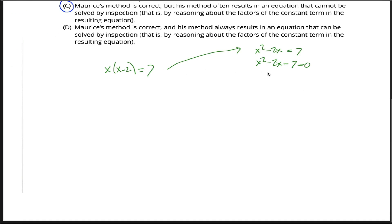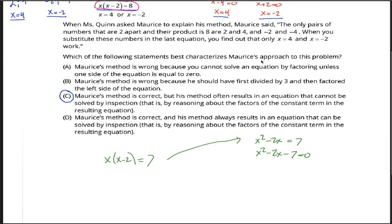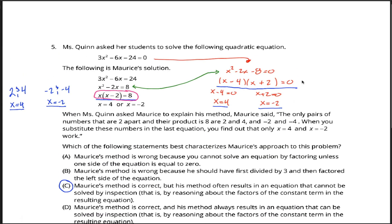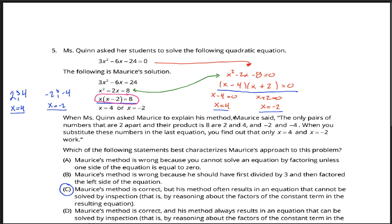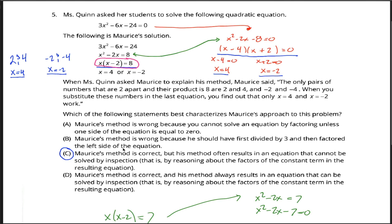Well, what if you have a problem that you can't solve by factoring? Then you can't solve it by factoring, but if you're the teacher and a student did the problem this way, would you be like, oh, that's great work, student. However, your method often results in an equation that cannot be solved by inspection, that is, reasoning about the factors of the constant term in the resulting equation. No, you wouldn't. You'd be like, great. I gave you a problem to factor. You factored it. You solved it. That's fantastic. You now know how to factor. Similarly, Maurice was given a problem that can be solved by factoring. He factored it. He got the right answer. That's fantastic.